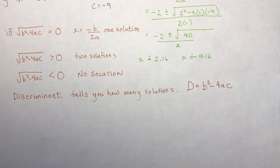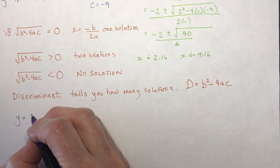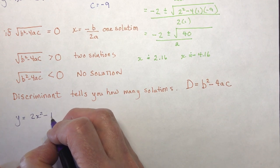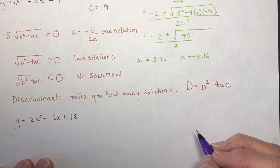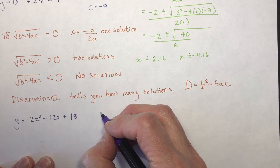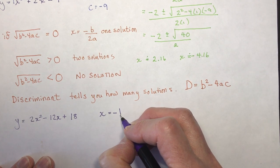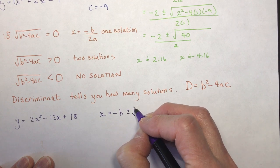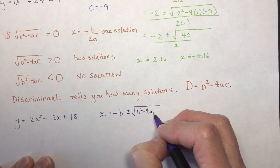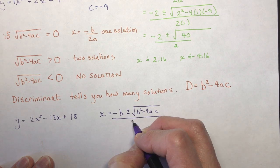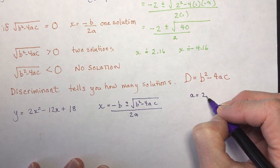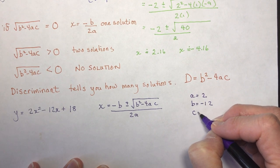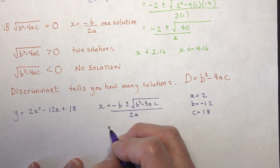Let's do another example: y equals 2x squared minus 12x plus 18. I'm going to use the quadratic formula — really good idea to write it out. x equals negative b plus or minus the square root of b squared minus 4ac, the whole thing over 2a. Don't forget the whole thing part. So my a is 2, my b is minus 12, and my c is 18.